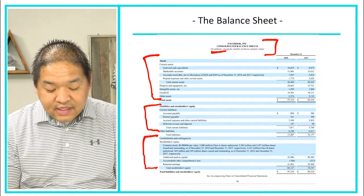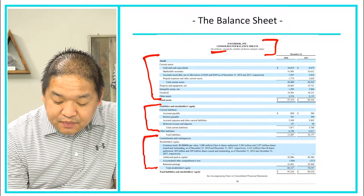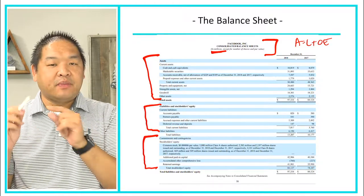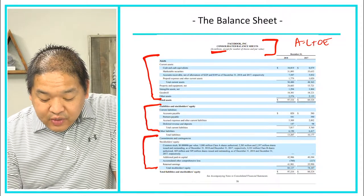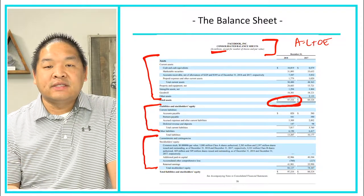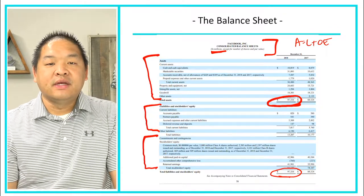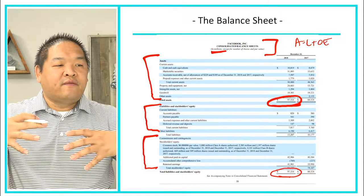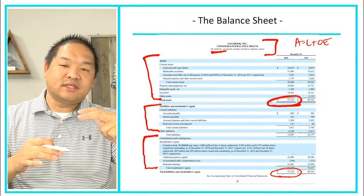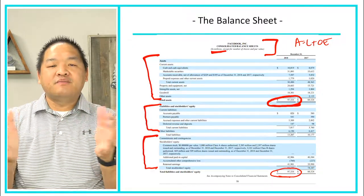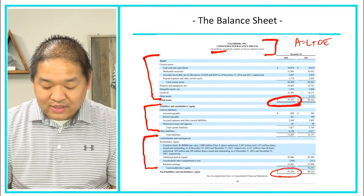Notice that assets equals liabilities plus owner's equity — both sides must balance. Facebook in 2018 had $97 billion in assets, so liabilities plus owner's equity should also equal $97,334,000,000. Those two balance. From a high-level standpoint, we can say the balance sheet is correct because it balances and everything that should be there is probably in there.